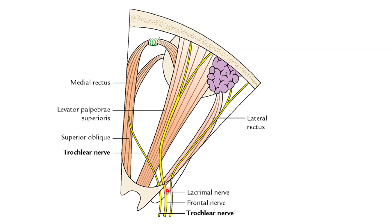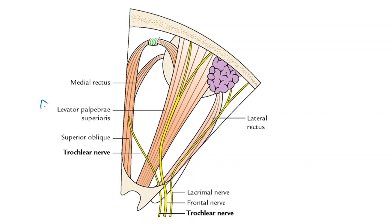The levator palpebrae superioris is related above to the frontal nerve. When we talk about the nerve supply of this muscle, it is supplied by the superior ramus of the oculomotor nerve — that is, the upper ramus of the third cranial nerve.